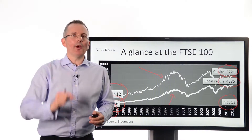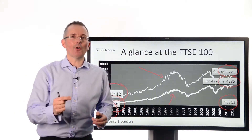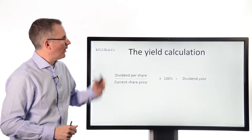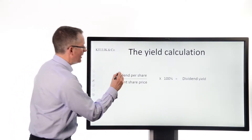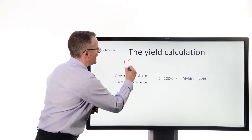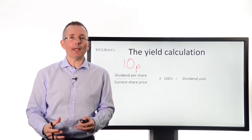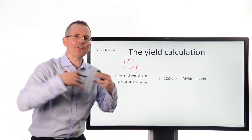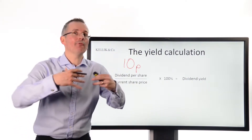We now know, or have been reminded, that income matters. Dividend yields are a way of screening stocks to try and find the best income payers. The dividend yield calculation is superficially quite simple — it takes the dividend per share. There are two ways you can calculate a dividend yield: on a historic basis, or on a forward basis, since most investors are looking to the future and want to know what could happen.